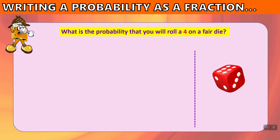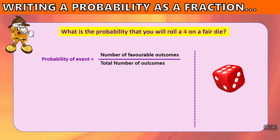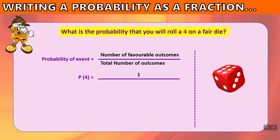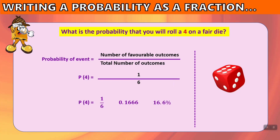When we write probability as a fraction, we ask: what is the probability that you will roll a 4 on a fair die? From a previous video, the formula is the number of favorable outcomes divided by the total number of outcomes. The probability of rolling a 4 equals 1 — only one face has the number 4 — divided by 6, the total faces. So the probability of getting a 4 is 1 out of 6, written as a decimal 0.1666, as a percentage 16.6%, or in words, a 1 in 6 chance.